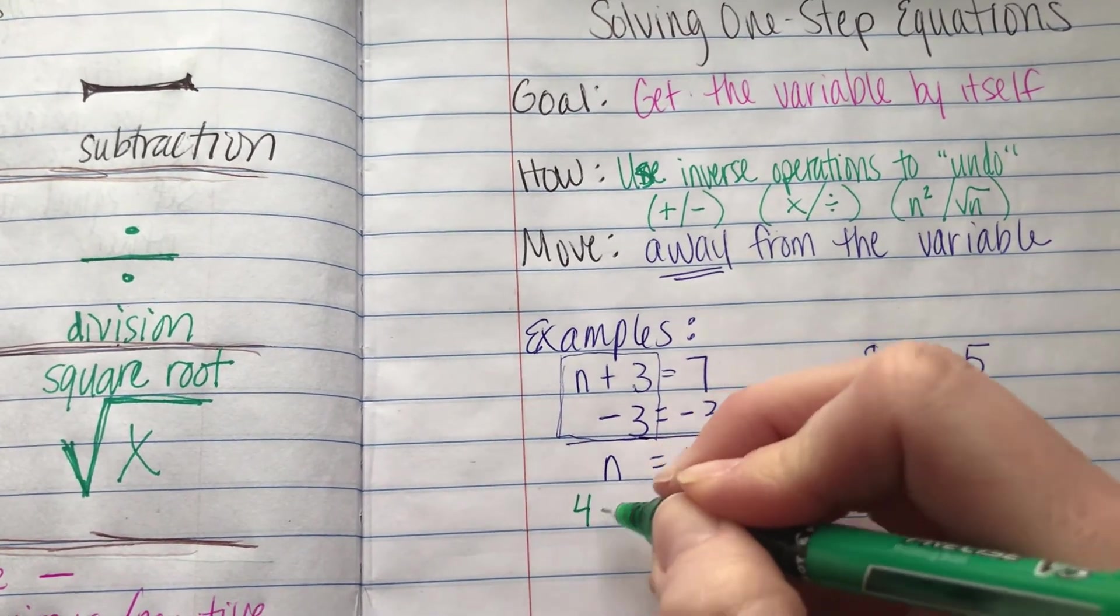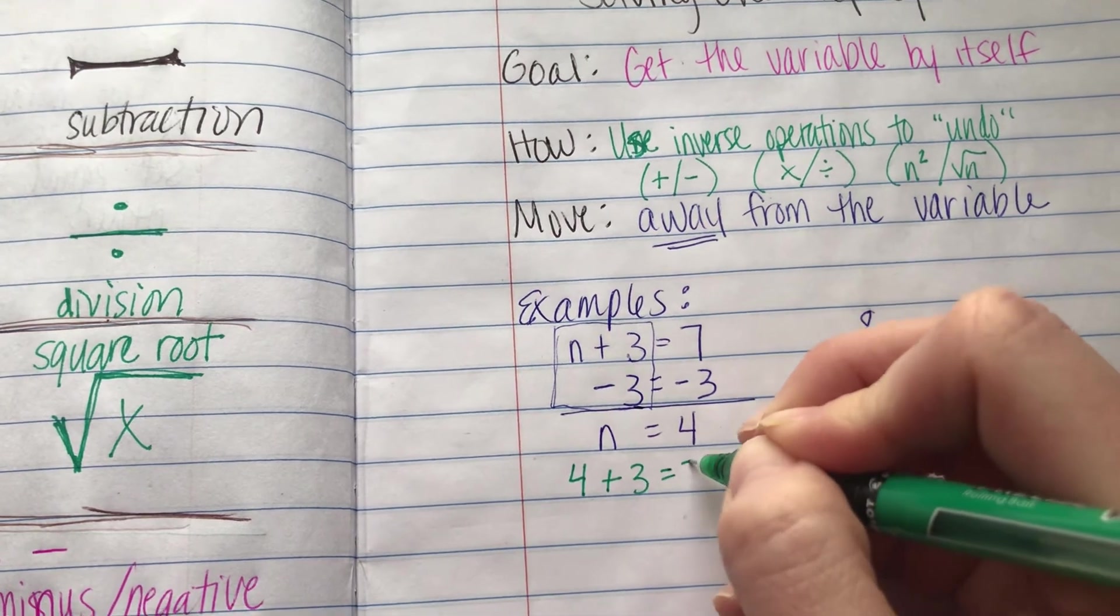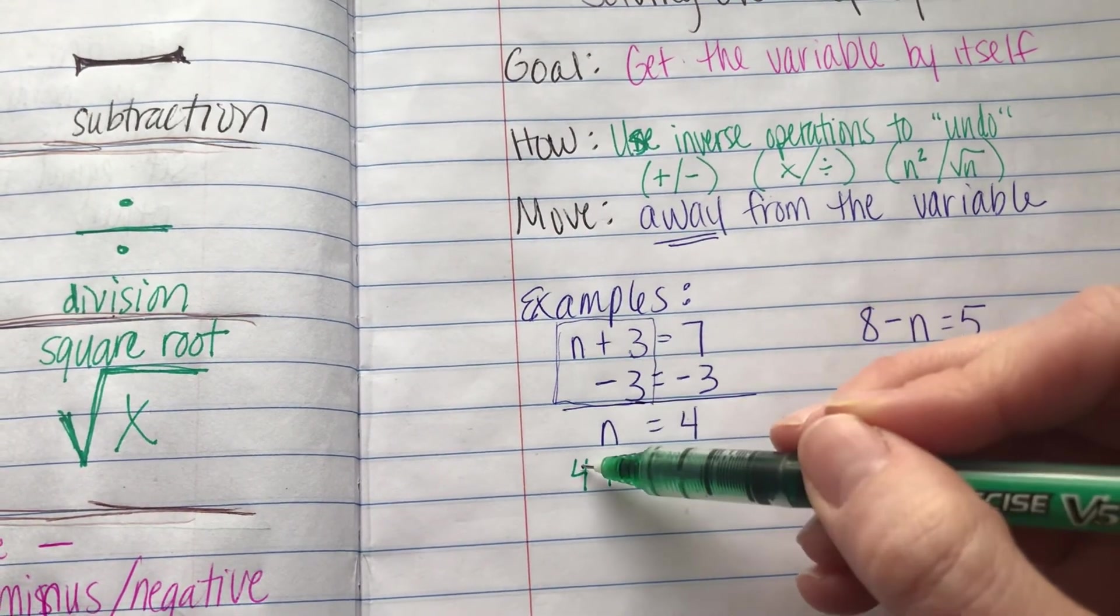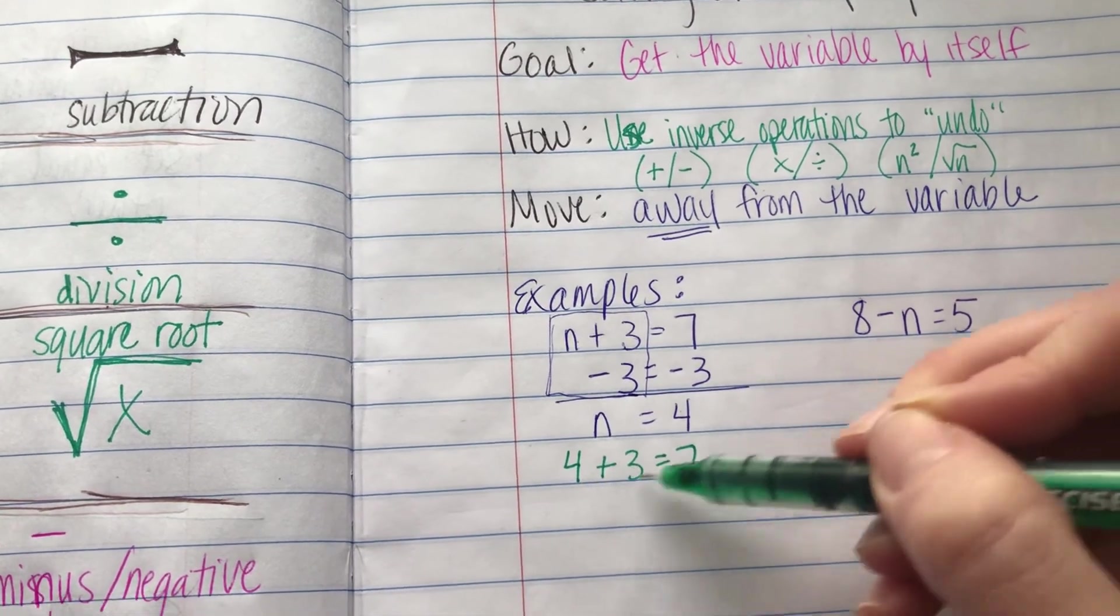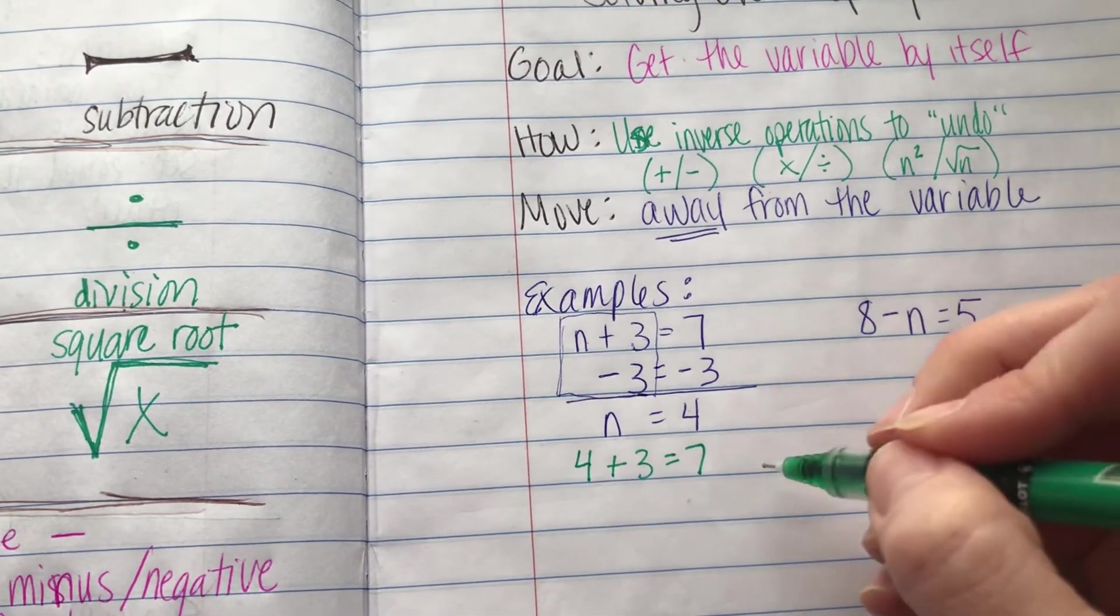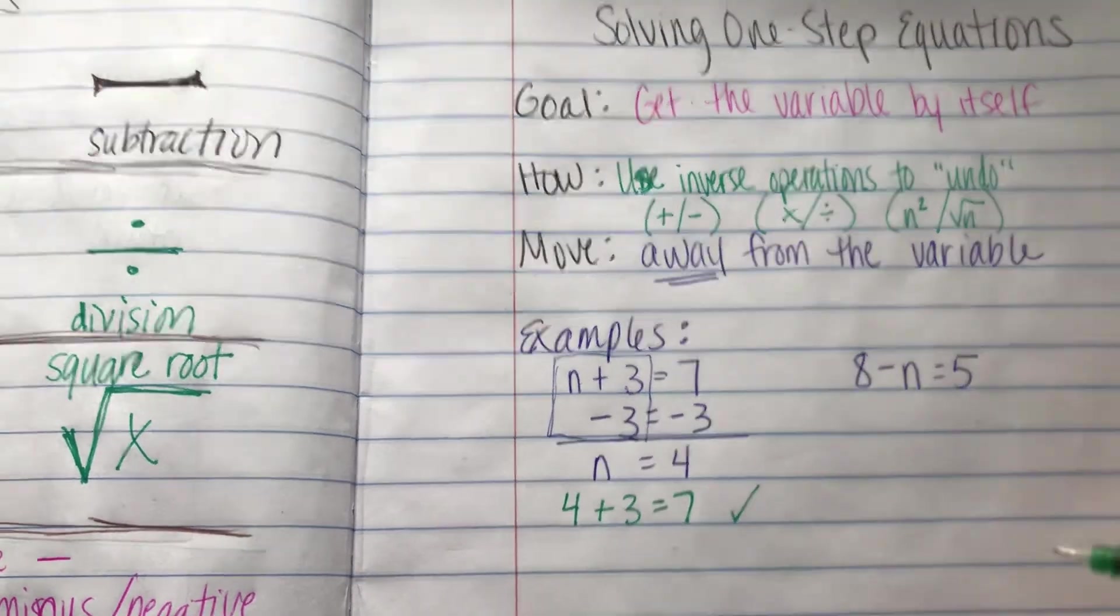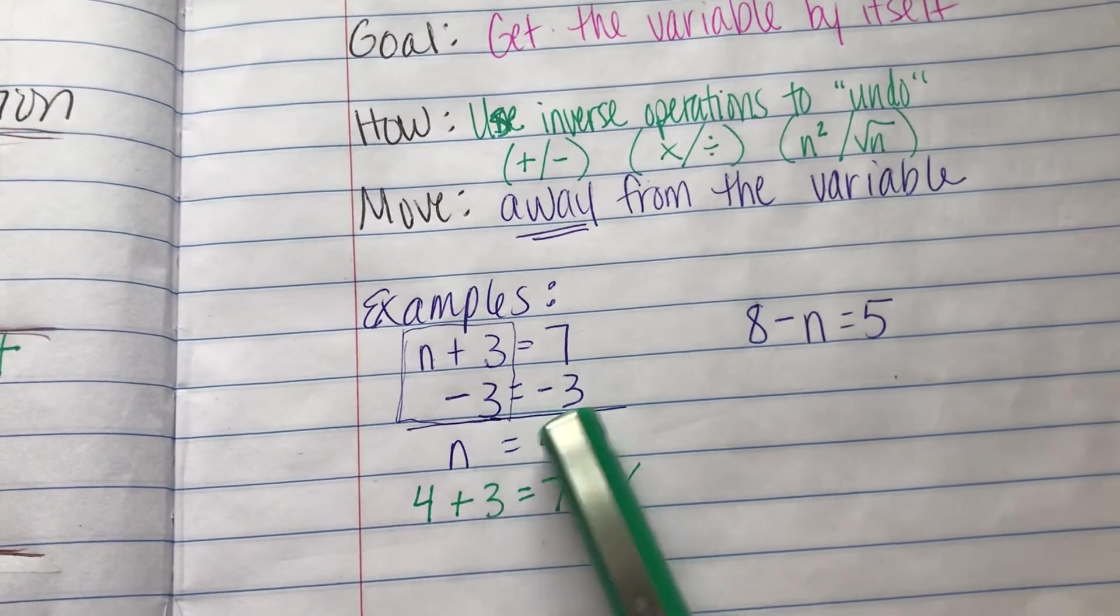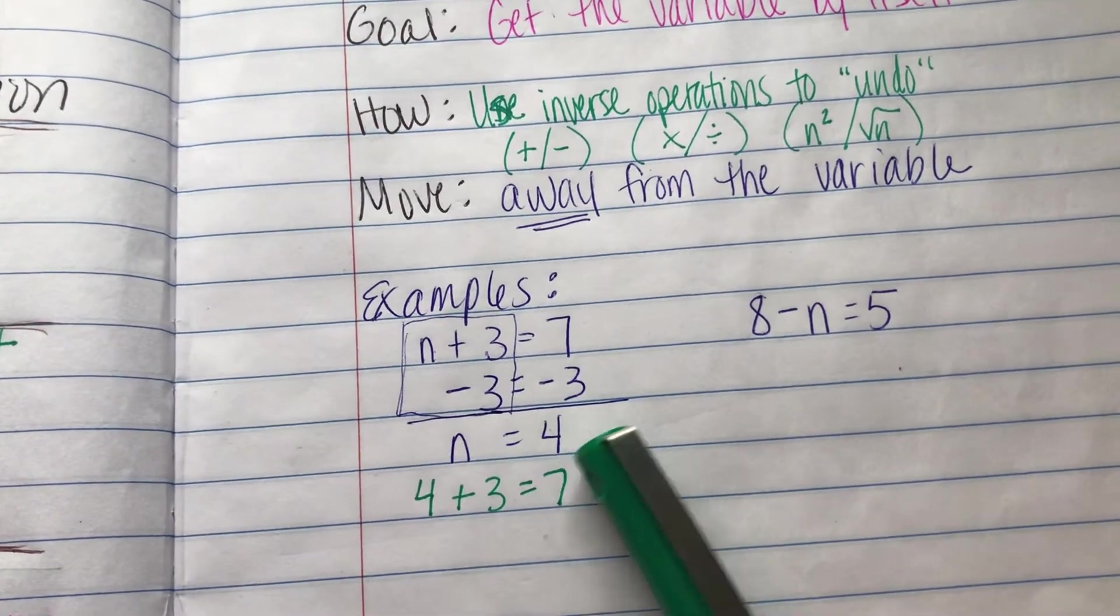You can go back and check that by putting 4 in place where n was. So we'll say 4 plus 3 equals 7. I took the 4, put it where the n was, and I wrote that equation out. And is that true? Yes. So I have the right answer, n equals 4. You probably just could look at that and know that it equals 4, but these are the steps for how you would solve it.